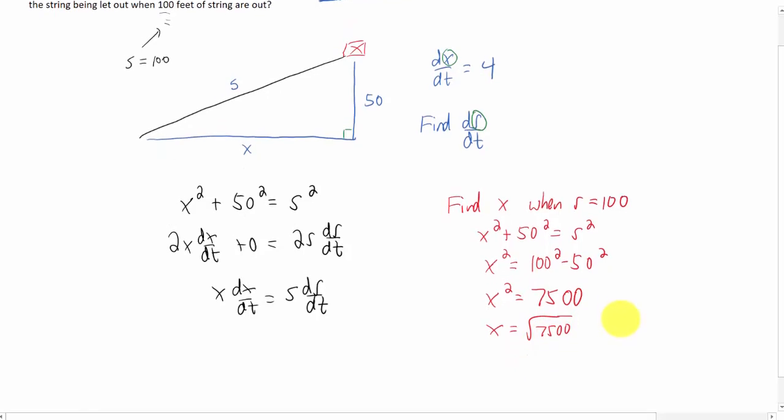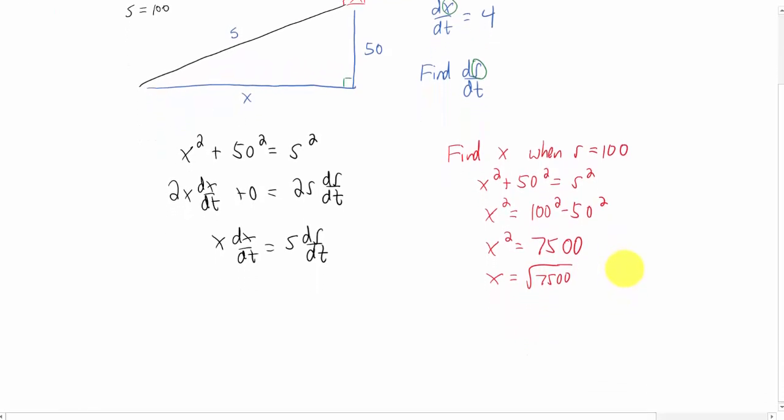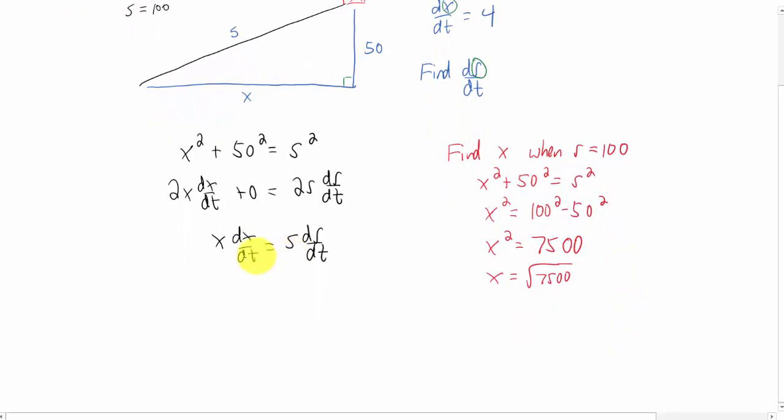Now we are in a position where we can plug everything that we know into this equation right here. We know that X is the square root of 7500. We know that dx/dt is 4. We know that S is 100 and we're looking for ds/dt. We just need to solve this equation.